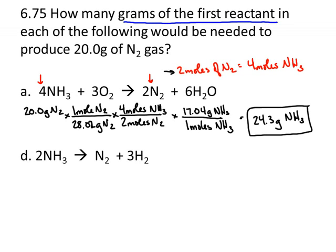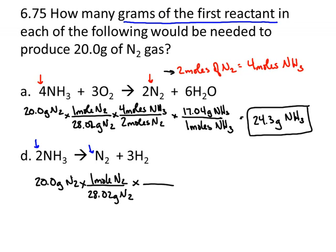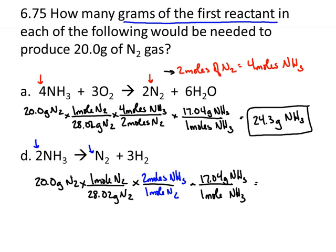Let's go on to letter D: how many grams of the first reactant for 20.0 grams of N2? Again, 20.0 grams of N2 — going to molar mass because I've got grams and need to go to moles. Then I go from N2 to NH3: the mole ratio is one mole of N2 to two moles of NH3. Then finally to grams using 17.04 grams of NH3 per mole. Calculation: 20 ÷ 28.02 × 2 × 17.04 gives me 24.3 grams again.